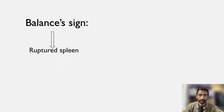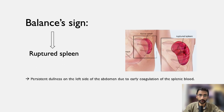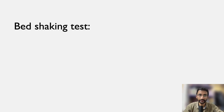Balance sign is done to confirm ruptured spleen. There is persistent dullness on the left side of the abdomen due to early coagulation of the splenic blood. Even at this stage, shifting dullness is present on the right side.